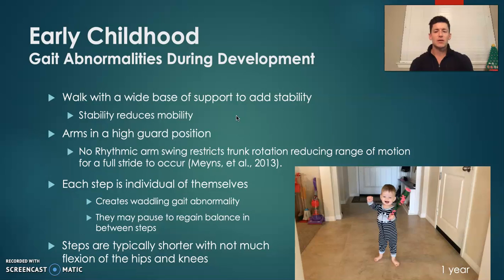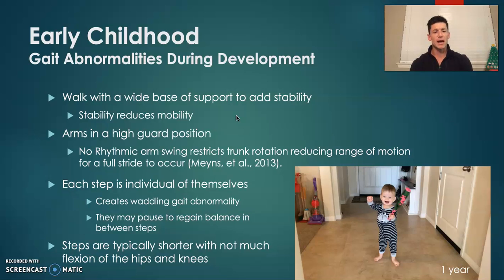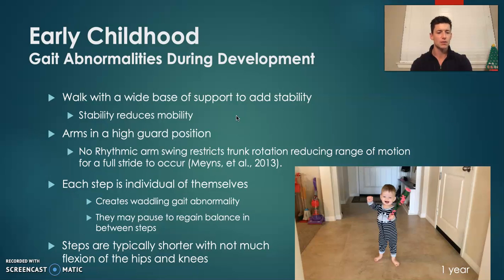In early childhood, the gait abnormalities you typically see are a wide base of support. This is to add stability, which often comes with a reduction in mobility. Typically, with their feet toed out, their steps are shorter with very little hip or knee extension.